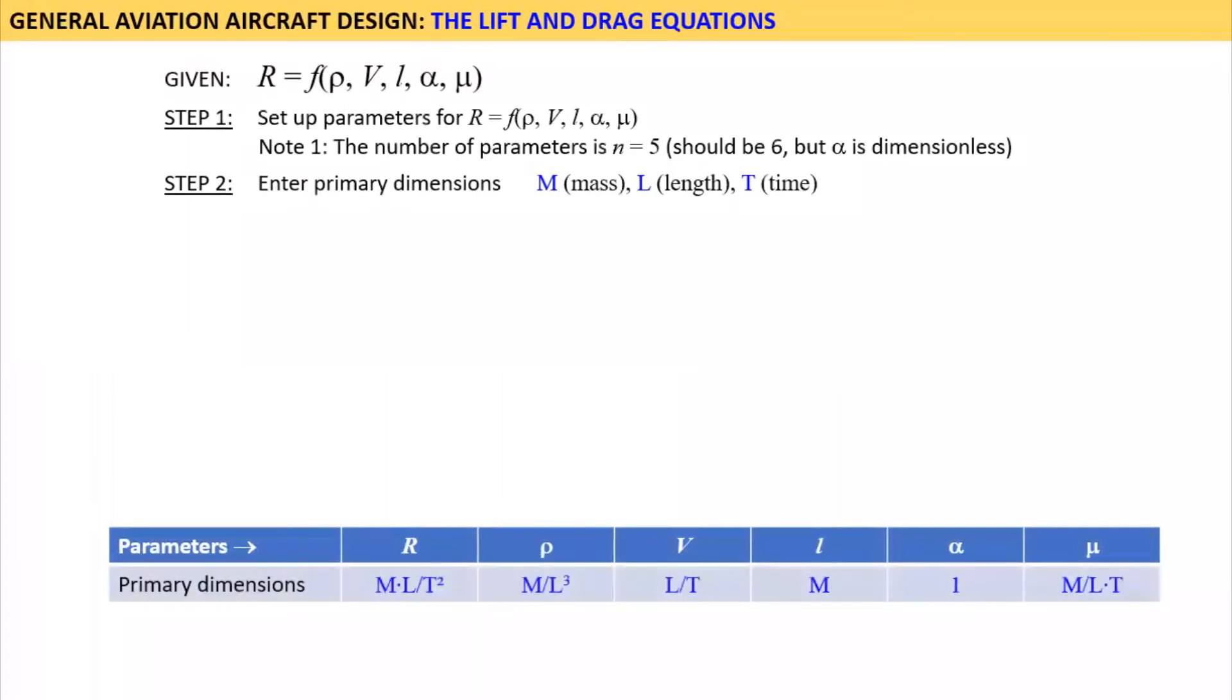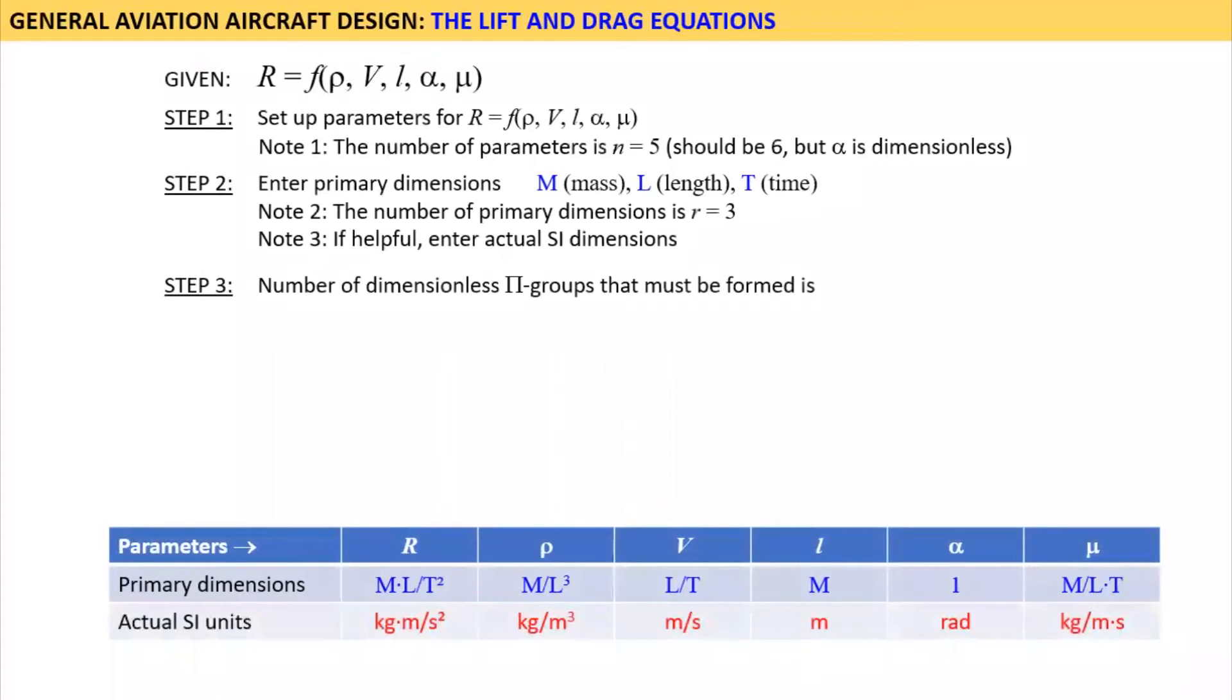Step 2. Enter primary dimensions. These are mass, length, and time. Note that these constitute three primary dimensions denoted as R. Also note, it may be helpful to jot down actual dimensions for clarity. Step 3. The above steps show that the number of dimensionless pi groups that must be formed is N minus R, which equals 2. This means we have to create two pi groups. You will see this shortly. Note that the term dimensionless means the manipulation of primary dimensions must result in M to the power 0, L to the power 0, and T to the power 0. You will see this shortly as well.